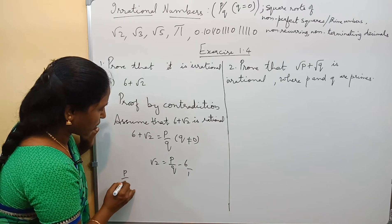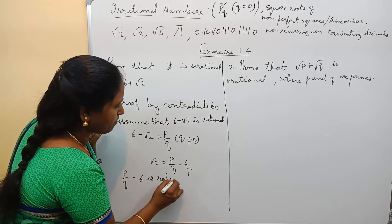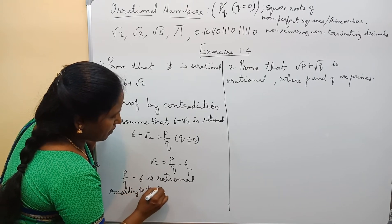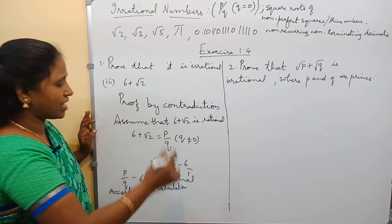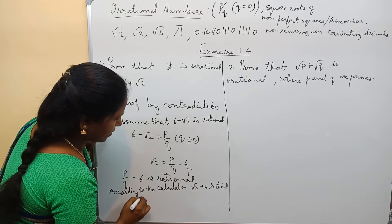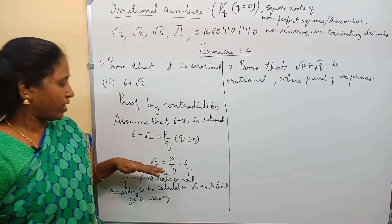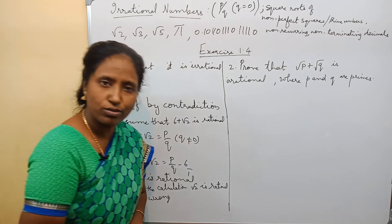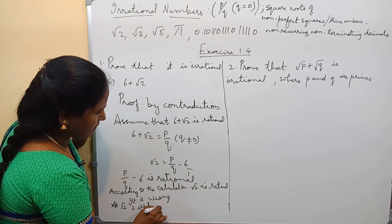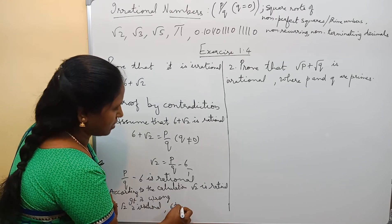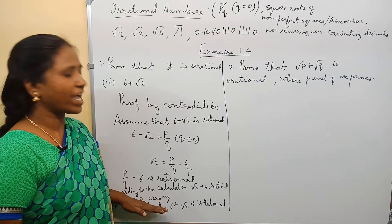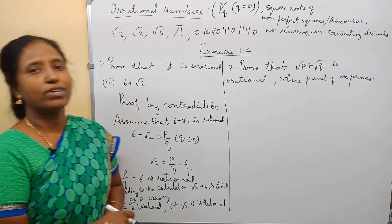So, how do we say that p by q minus 6 is rational? According to the calculation, rational minus rational gives root 2 as rational — but that is wrong. It is contradicting because root 2 is irrational. So, when root 2 is irrational, automatically 6 plus root 2 is also irrational. When we go with rational numbers and get the wrong calculation, we automatically conclude that 6 plus root 2 is irrational.